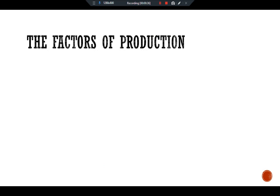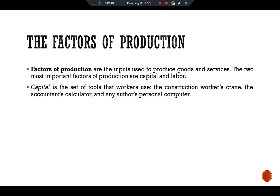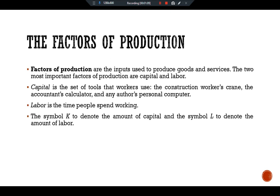Factors of production are the inputs used to produce goods and services. The two most important factors of production are capital and labor. Capital is the set of tools that workers use: the construction worker's crane, the accountant's calculator, and any author's personal computer. Labor is the time people spend working. The symbol K denotes the amount of capital and the symbol L denotes the amount of labor.